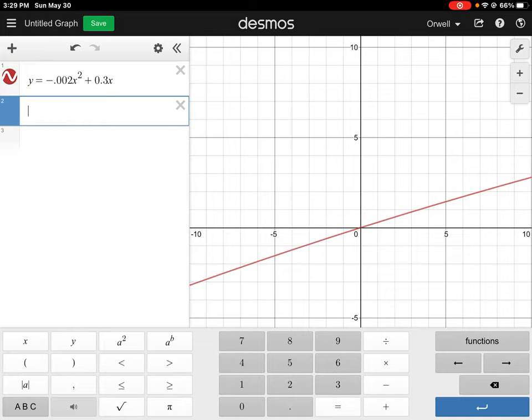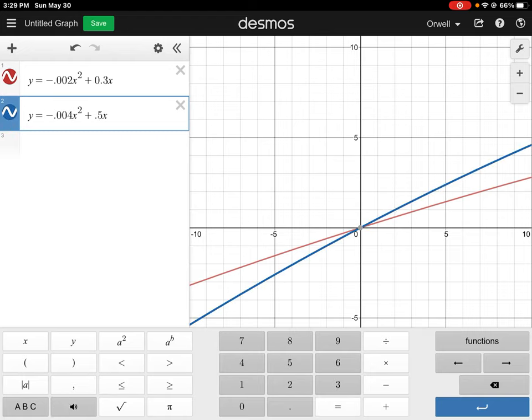And then to plot the second equation, you just go to the cell below it. And we're going to type y equals negative 0.004 x squared plus 0.5x. Okay. And then we missed the equal sign there. So I'm just going to put in the equals and then right away, the application will start to plot it.